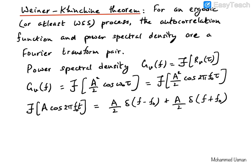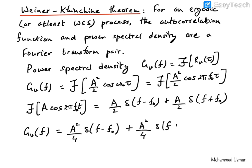Using this result, the power spectral density of the randomly phased sinusoid is GV(f) = (A²/4)δ(f - f₀) + (A²/4)δ(f + f₀). It has an impulse at frequency f = f₀ and another impulse at f = -f₀, both with amplitude A²/4. We can now plot the power spectral density and verify properties of power spectral density using this as an example.